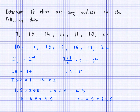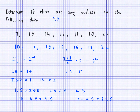So our smallest value is 10, and 9.5 is less than that, so 10 is within our range. Our largest value is 22, and our threshold is 21.5, so 22 is outside that range. We will say there is an outlier, and our outlier is 22.